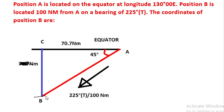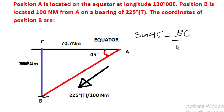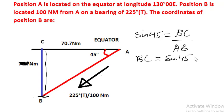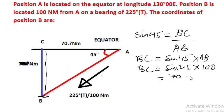Now we have to find the latitude of B. Once again using trigonometry, sine of 45 equals opposite over hypotenuse, that is BC upon AB. So BC is equal to sine 45 multiplied by AB, which is sine 45 into 100.